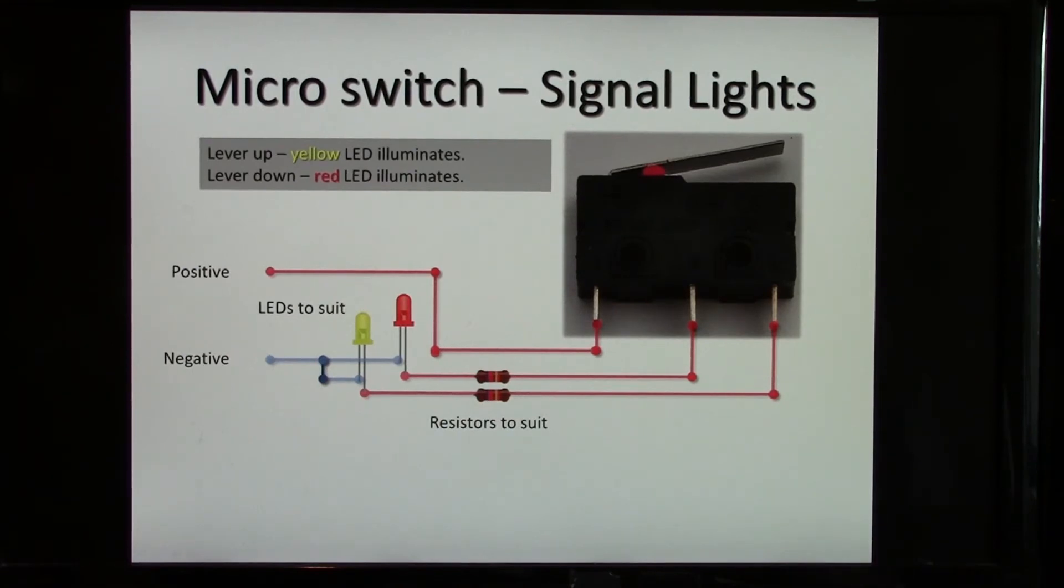The circuit I just demonstrated uses two LEDs and two resistors in the switching circuit, and has a third LED that's always on. On this circuit, you can see I've connected the common to the positive, and the switched outputs in the center and the right each go to an LED through a resistor. The other side of the LED then goes to the negative.